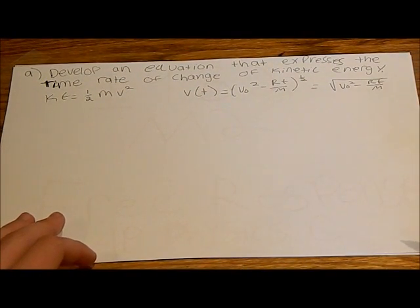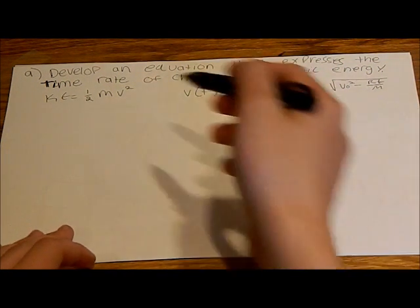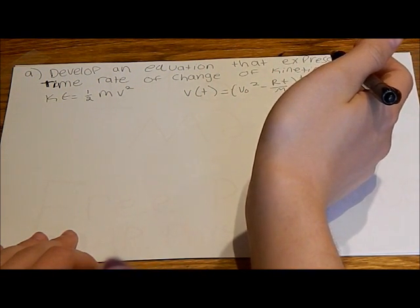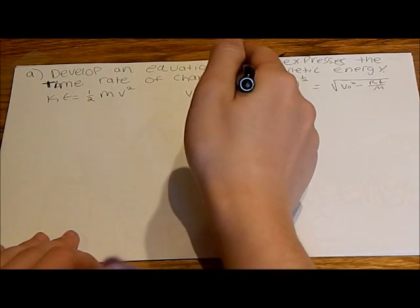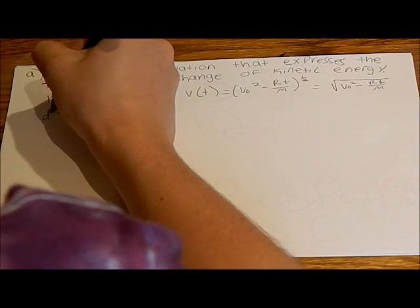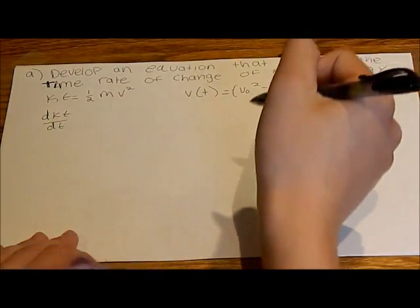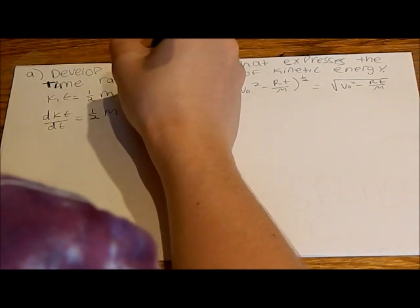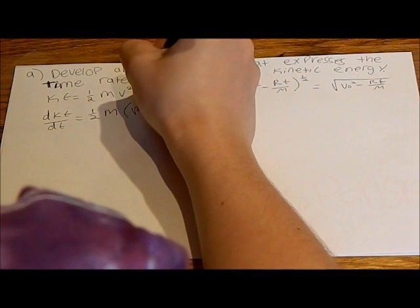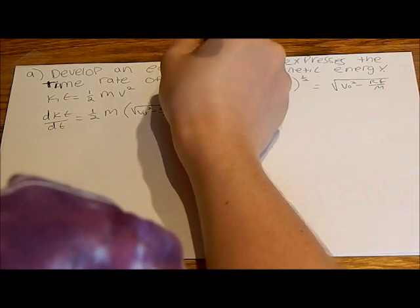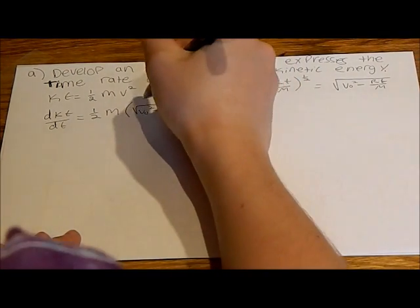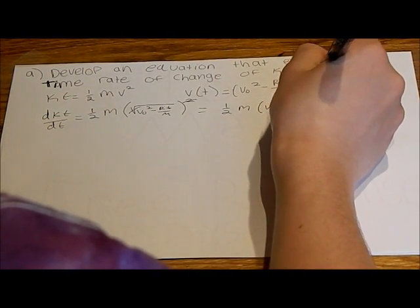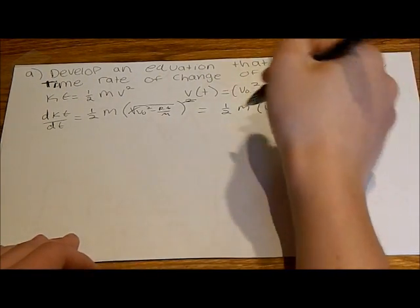When I first did this problem, I thought it said find the change of kinetic energy, so I thought they wanted v-final minus v-initial. But because v-final is zero and initial is v-naught, I realized they want the time rate of change — the derivative of KE. So dKE equals one-half m times the square root of v-naught squared minus rt over m, squared. The squared removes the square root, giving one-half m times v-naught squared minus rt over m.